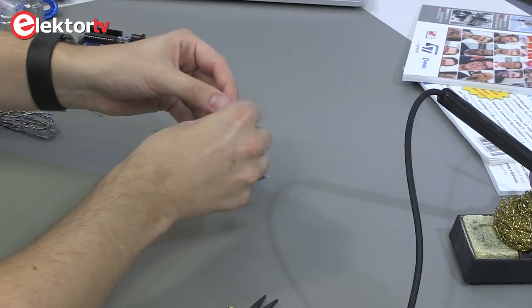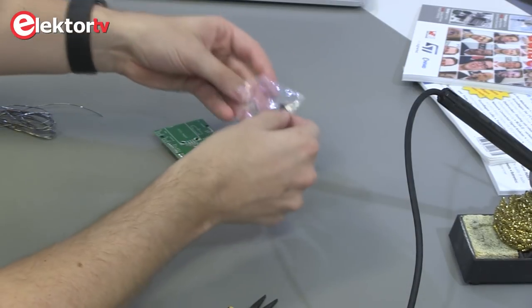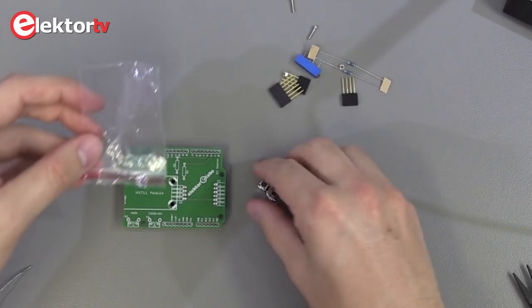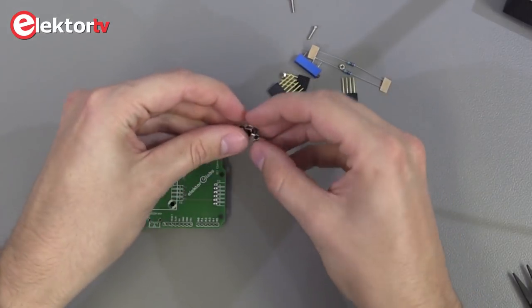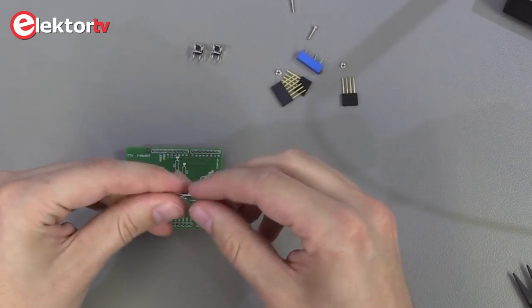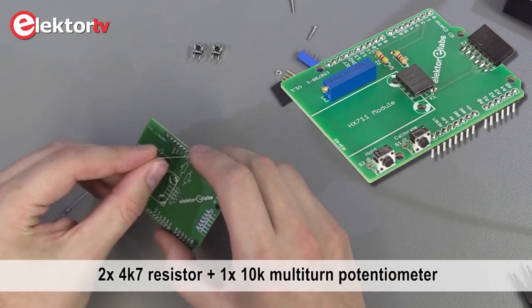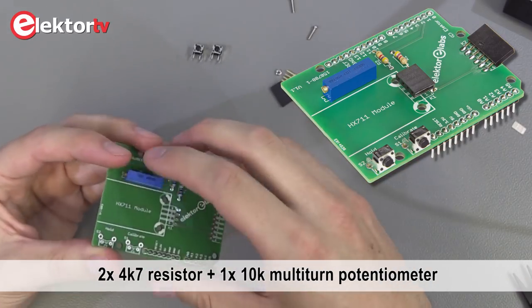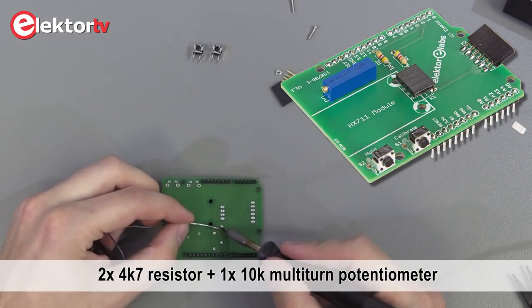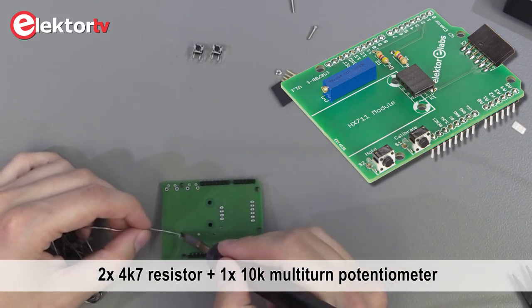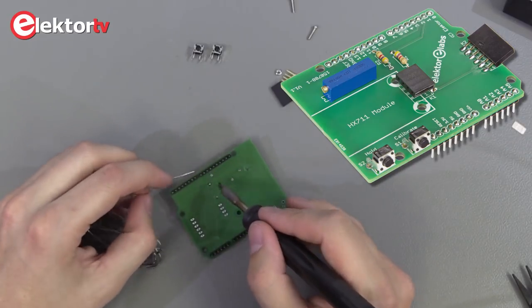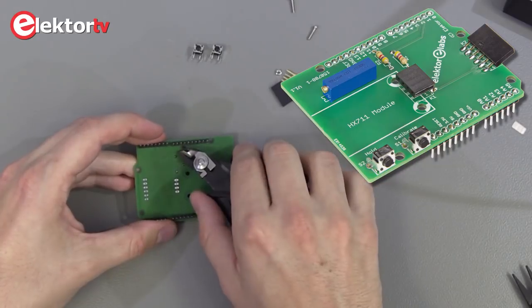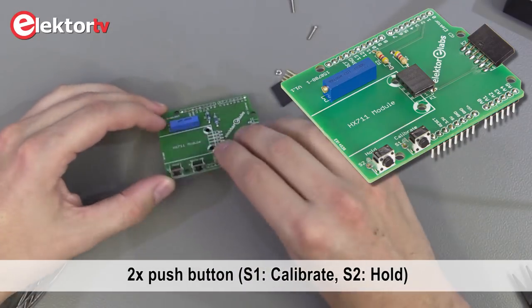Now we can take the bag with the components. It contains two resistors, two pushbuttons, headers, and a potentiometer. Let's start with the two resistors and the potentiometer. We can solder all three at once. Check if everything is OK. Then we can solder the pushbuttons.